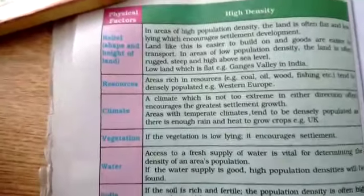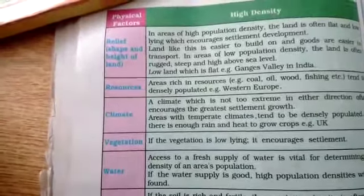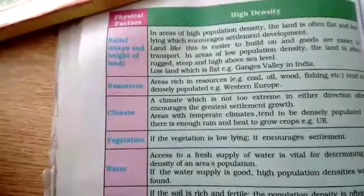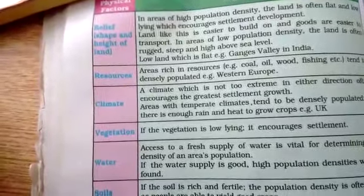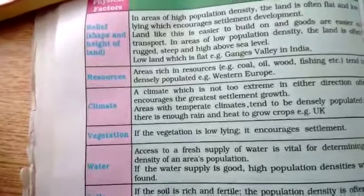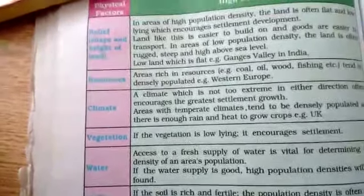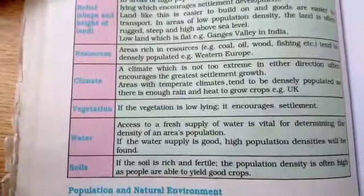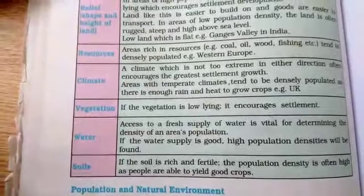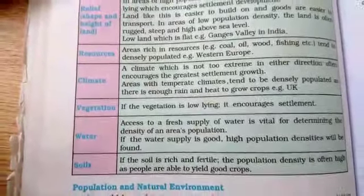If the climate is extreme, people will not settle down there. The climate should be moderate so people will definitely settle down and they can grow their crops there. Another reason is vegetation — flat land or low-lying land can encourage vegetation.